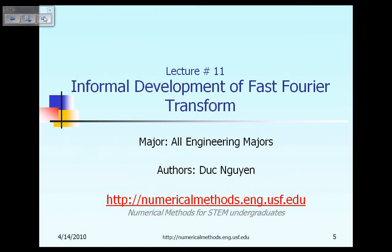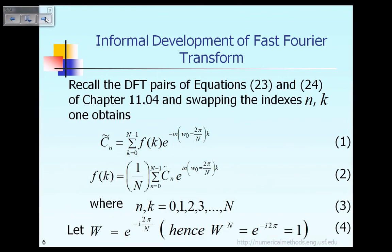Let's talk about the informal development of the Fast Fourier Transform. According to the previous lecture, if you look back at equations 23 and 24, the story goes like this: any periodic function f can be expressed in exponential form together with the unknown complex constant c̃_n, where you compute c̃_n using equation 2, and that unknown can be computed based on equation 1.